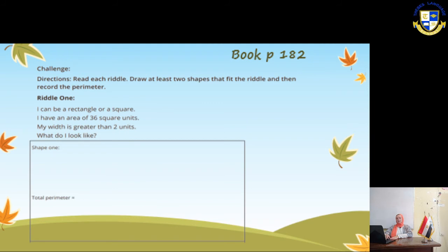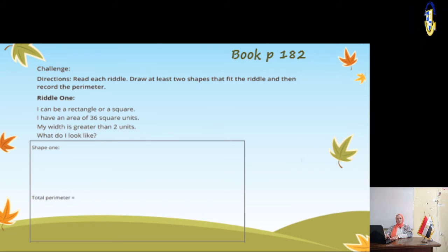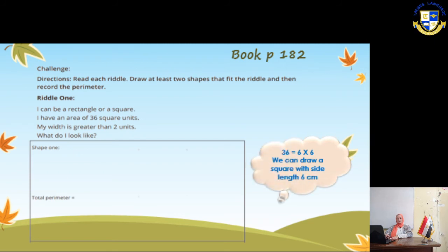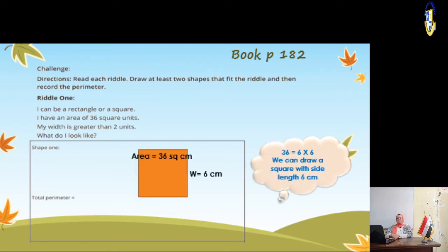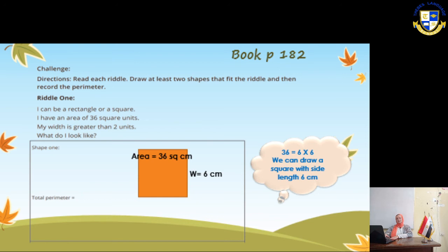Book page 182. Riddle number 1: I can be a rectangle or a square. I have an area of 36 square units. My width is greater than 2 units. What do I look like? Shape 1 will be a square. 36 means 6 × 6, so we are going to draw a square with side length 6 cm. The perimeter of the square will be 6 × 4 = 24 cm.